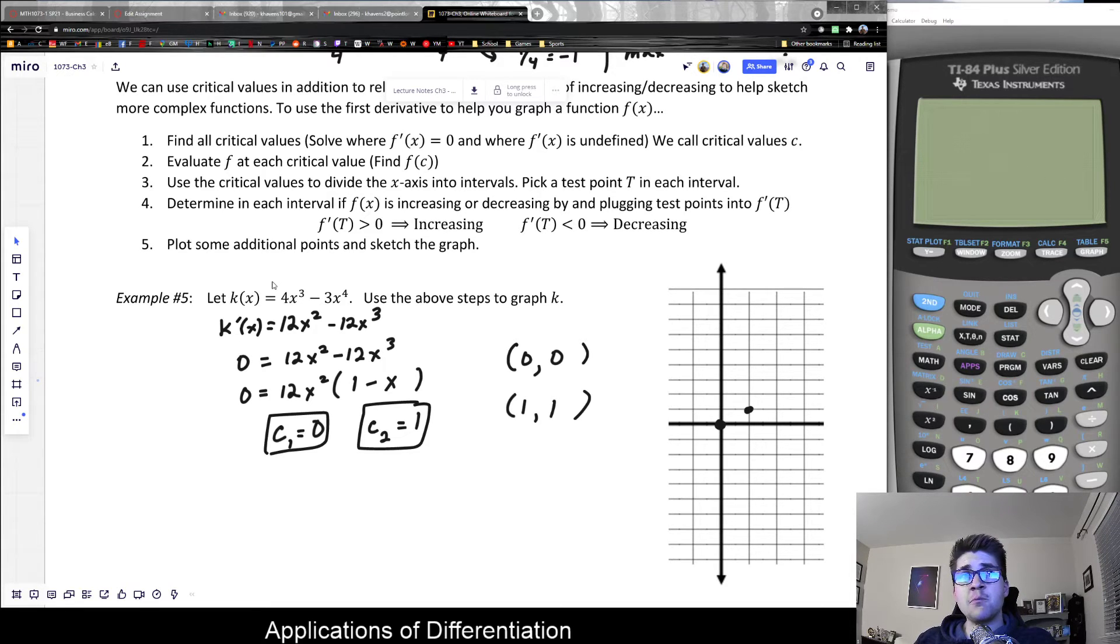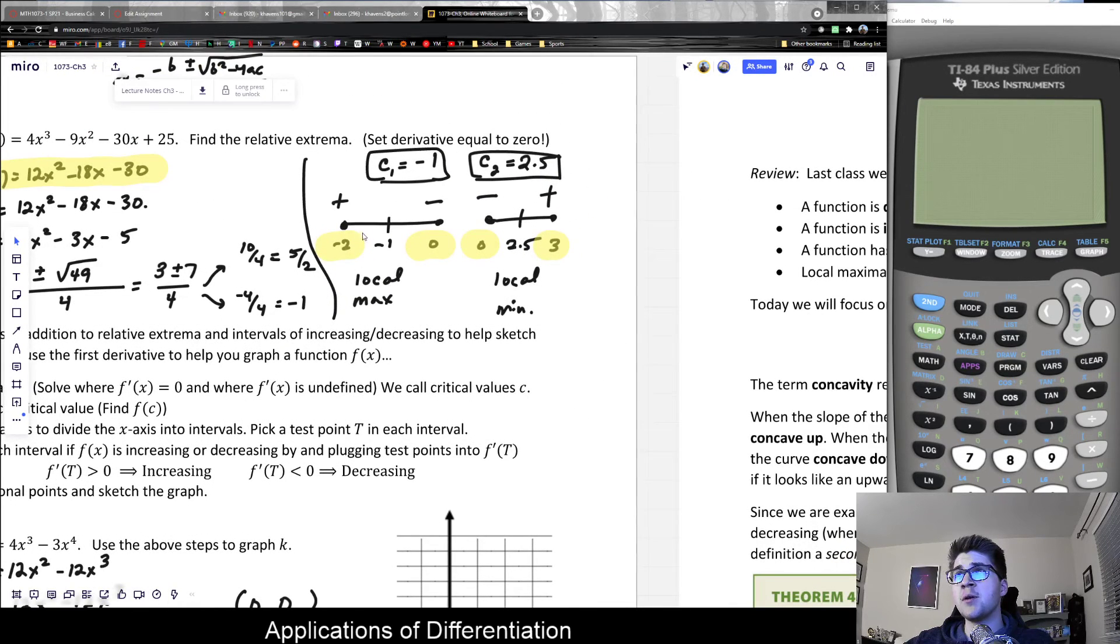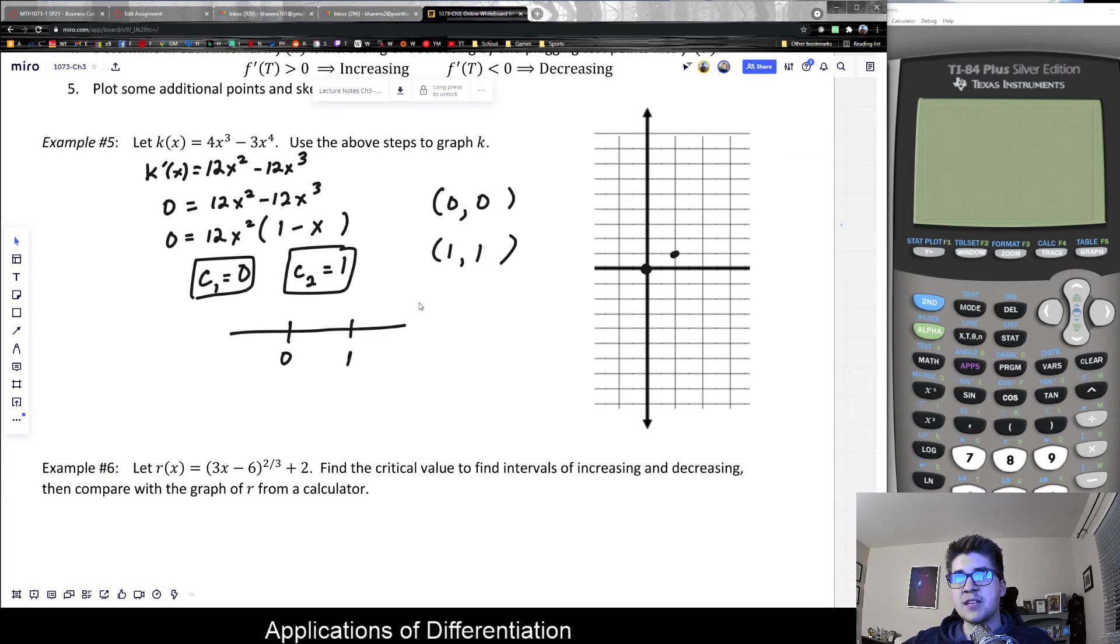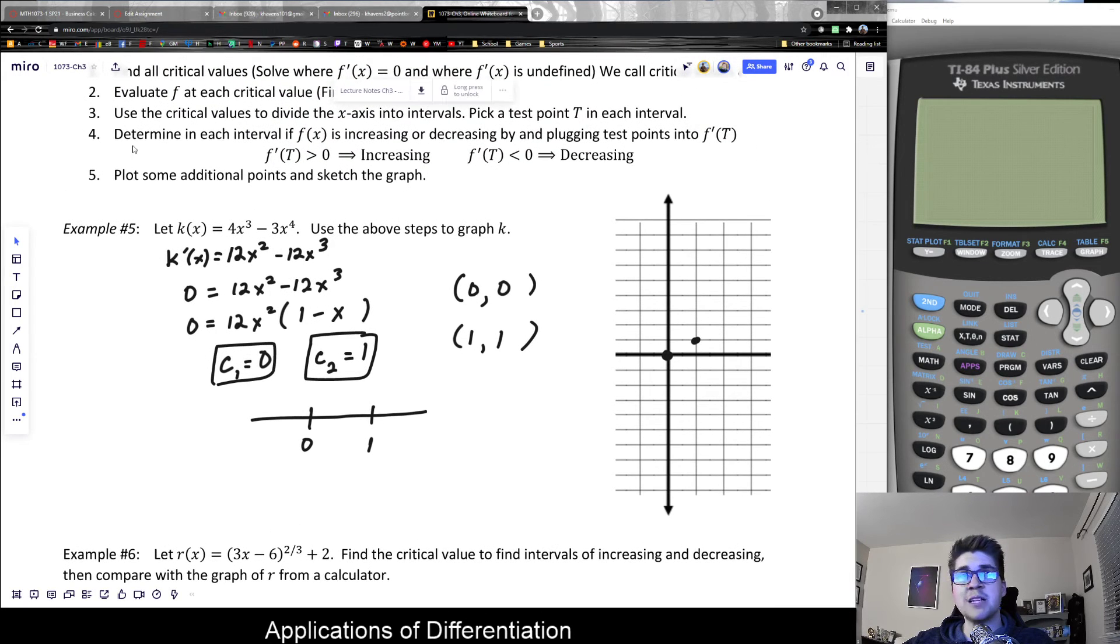I could also figure out if those are mins and maxs by using the first derivative test. Step three: use the critical values to divide the x-axis into intervals. It makes sense to take your entire x-axis and plot those critical values at 0 and 1. Then we determine whether it's changing from positive to negative in the derivative by checking the slope between each point.